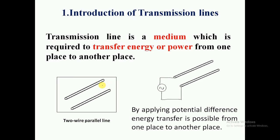First of all, what is a transmission line? A transmission line is a medium which is used to transfer energy or power from one place to another. For example, in figure 1 you can see two parallel wires. If we want to transfer power from one place to another, we connect the two wires with a voltage difference and the energy and power can be transferred.